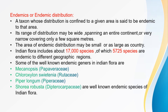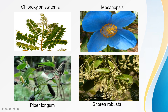Some well-known endemic genera in Indian flora are: Meconopsis, which belongs to the Papaveraceae family; Chloroxylon swietenia, which belongs to the Rutaceae family; Piper longum, which belongs to the Piperaceae family; and Shorea robusta, which belongs to the Dipterocarpaceae family.